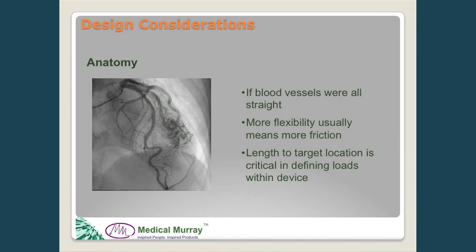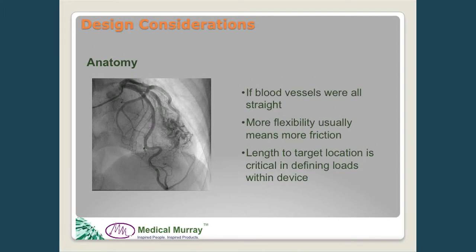The second consideration is anatomy. If all blood vessels were straight, life would be easy, but as we can see in the picture, they're not. We have to introduce flexibility into the device, and with flexibility come tackier plastics, tackier surfaces, and more friction. We have to take tighter turns into smaller locations, deal with reduced wall thicknesses, lumens that want to go oval or kink, and more surface contact between components. We also have to consider the length of the target location, as devices become longer the magnitude of these loads increases.